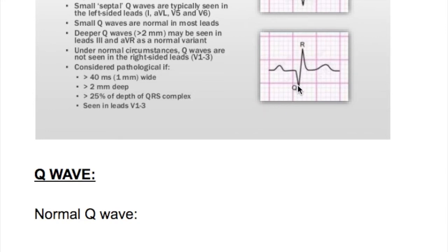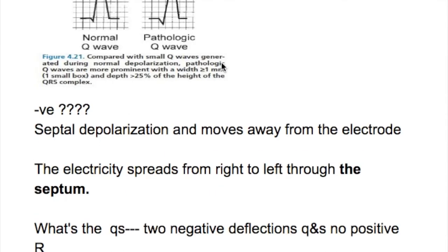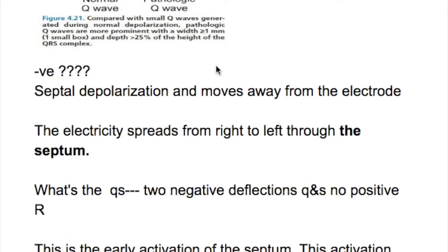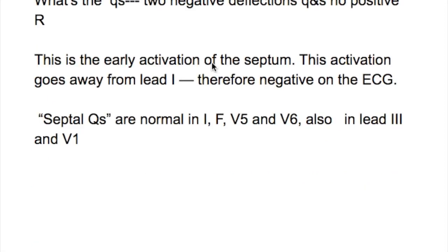Here we can see a QRS complex and a QS with no R wave. The Q wave represents septal depolarization, and it is negative because it moves away from the electrode — the electricity spreads from right to left through the septum. We do not see Q waves in all leads.